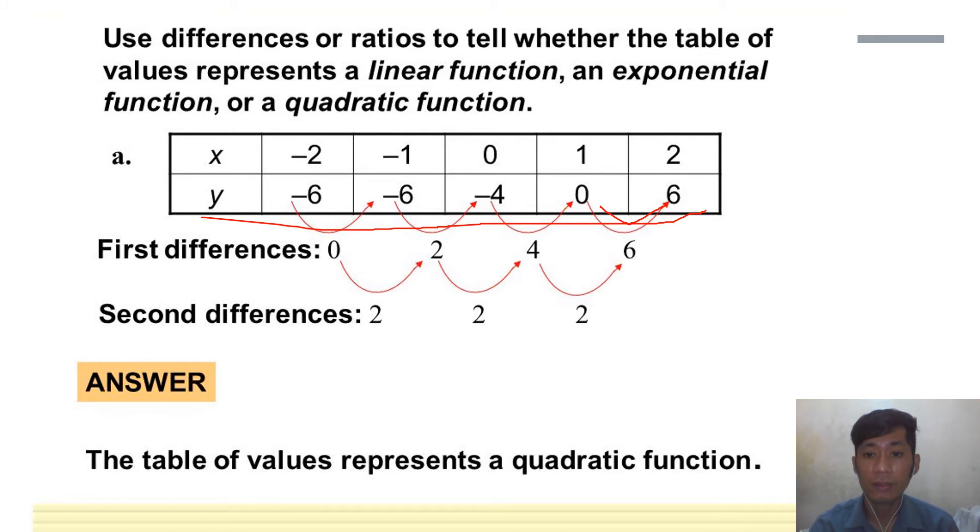So kukunin lamang po natin po ang difference po nila. So 6 minus 0, 6. 0 minus negative 4, that is positive 4. Negative 4 minus negative 6, 2. Negative 6 minus negative 6, that is 0. So after natin makuha lahat ng first difference, kukunin naman po natin yung second difference. 6 minus 4, 2 or minus 2, 2, 2 minus 0, 2. So kapag po sa second difference ay pare-parehas ang difference po, ibig sabihin, this table of values represent a quadratic function.